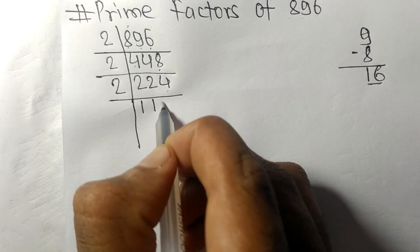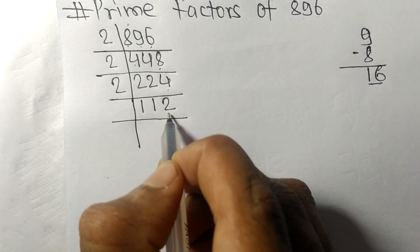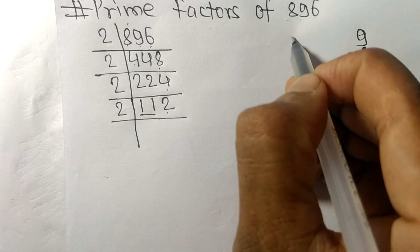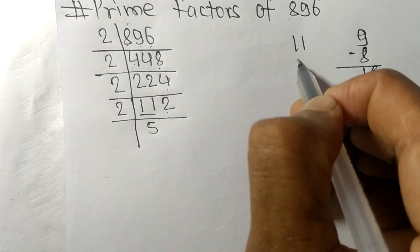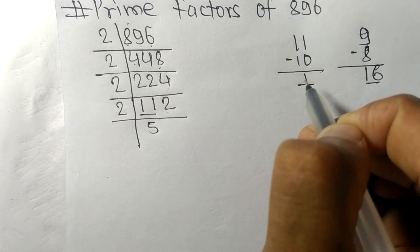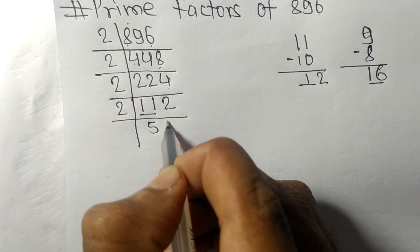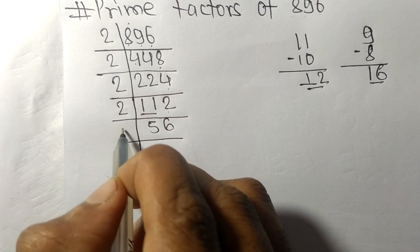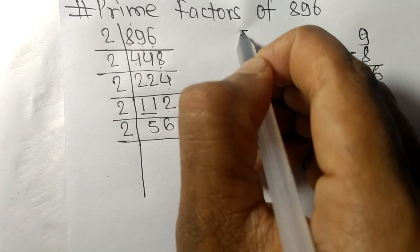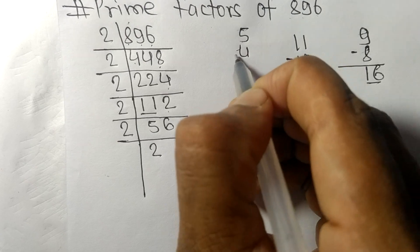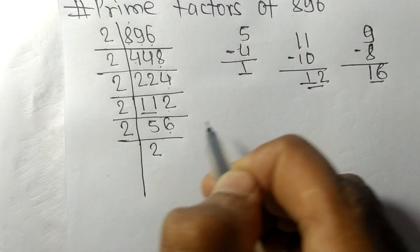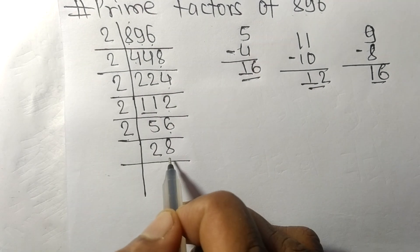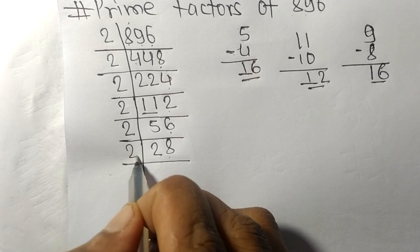Continuing to divide by 2: we get 112, which ends in even number 2, so it is exactly divisible by 2. Bringing down, 2 times 6 is 12, again ending in even number 6, so divisible by 2. We get 56, then 2 times 2 is 4, subtracting gives 16, 2 times 8 is 16, so we now get 28, which also ends in even number 8, divisible by 2.